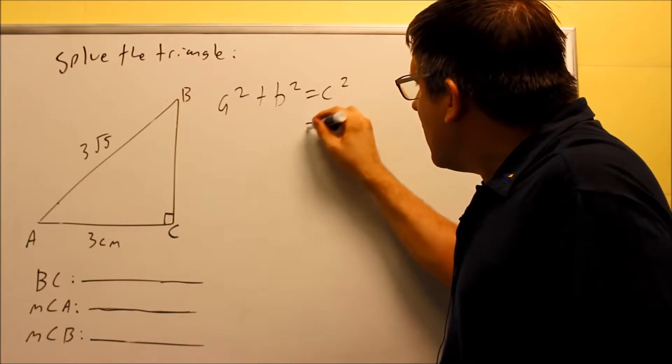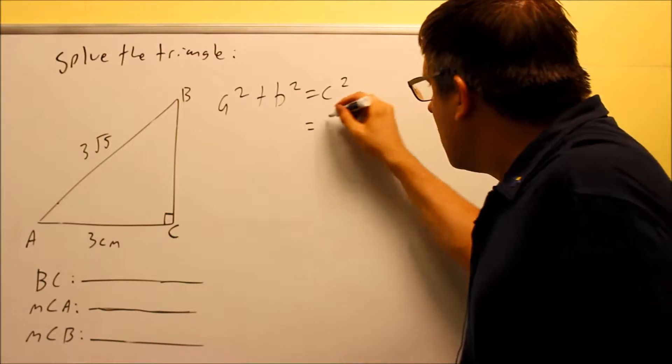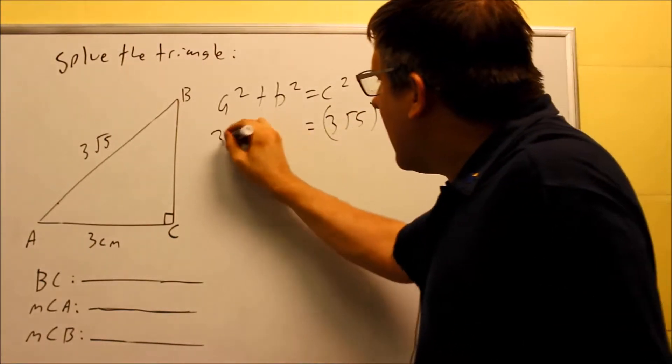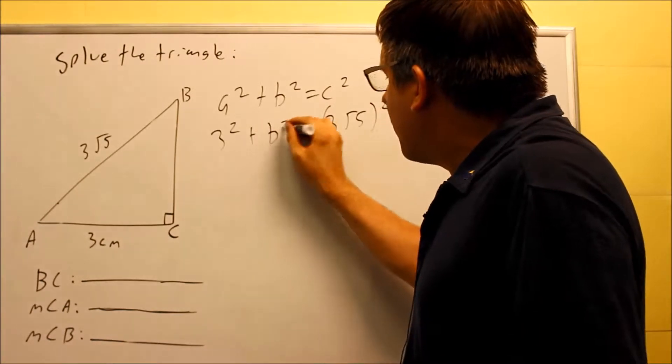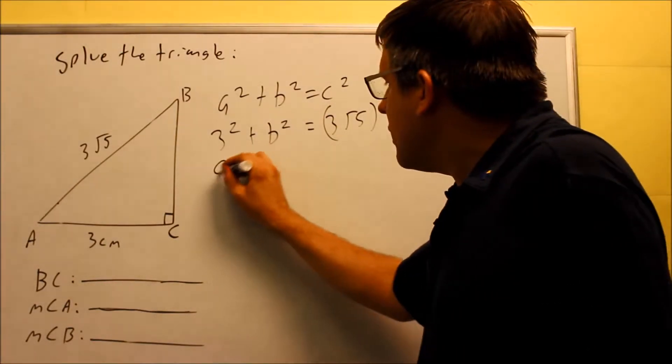In this case the C is actually given, it's the side opposite the 90 degrees. So that's 3√5 and we're going to square that. The A, this is 3 squared and then I have the B which is unknown, we're trying to solve for B. So we're going to do 9.